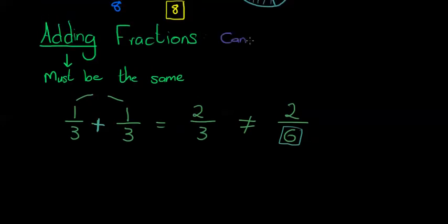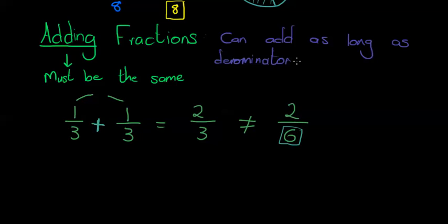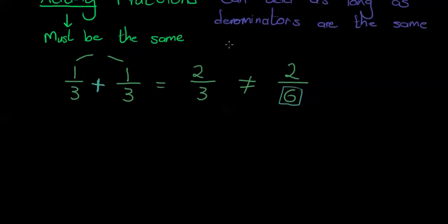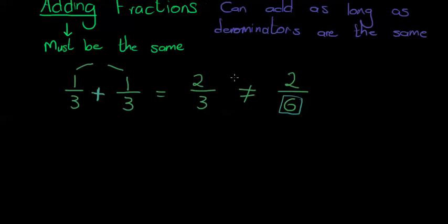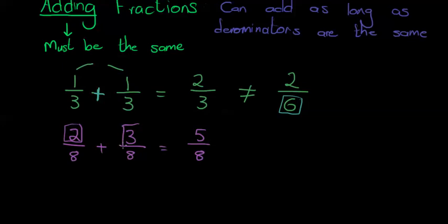I can add any two fractions as long as the denominators are the same. If they're not the same, we'll look at that in a later lesson. For example, two eighths plus three eighths gives five eighths. The numerator almost acts as a coefficient — just like two x's plus three x's gives five x's, the numerators are what you add together.